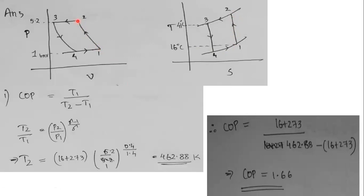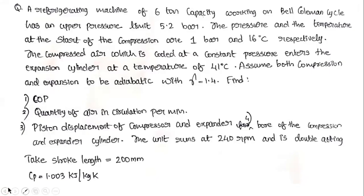Process 2→3 is the constant pressure heat rejection process, where heat absorbed during 4→1 plus work done during compression is rejected to the surroundings. This is represented as a constant pressure line on the TS diagram. Process 3→4 is the adiabatic expansion, shown as a curve on the PV diagram and a vertical line on the TS diagram.